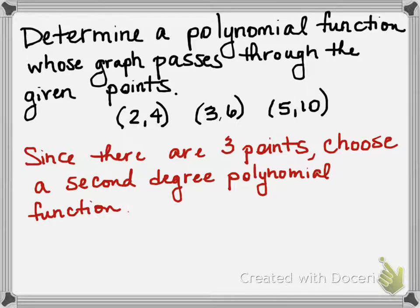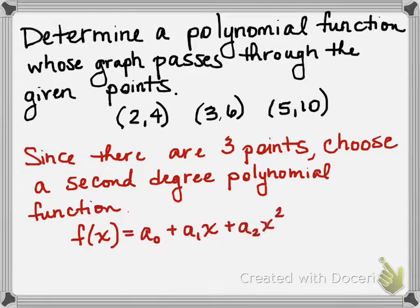Let's go ahead and write out what a second degree polynomial looks like. It is f(x) = a0 + a1x + a2x². You might use different variables or put them in a different order. Some of you might choose ax² + bx + c. The only reason I choose to do it this way is so that it extends easily if we want to do a cubic polynomial or a quartic polynomial or something of that sort. This way of numbering can easily be extended.